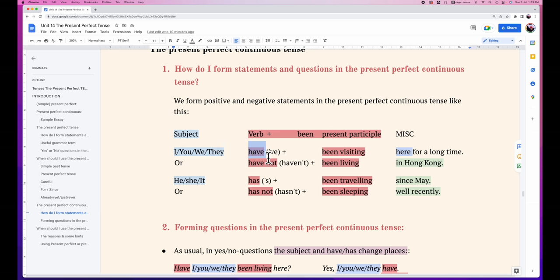The verb have, or negative statement have not or haven't, plus been - been is the past participle of verb to be - plus present participle visiting, living. Example: I have been visiting here for a long time. You have not been living in Hong Kong.